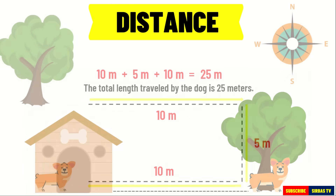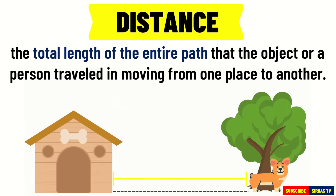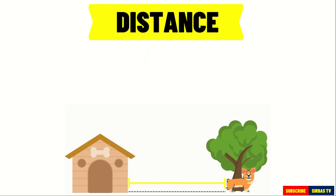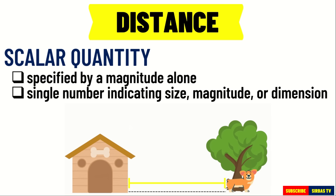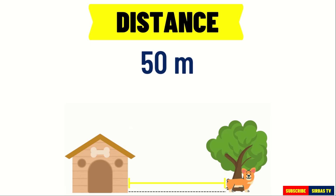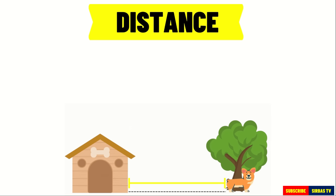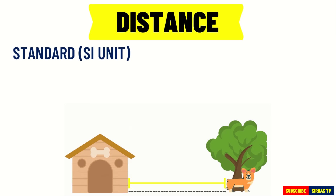In short, when you say distance, it is the total length of the entire path that the object or a person traveled in moving from one place to another. Distance is a scalar quantity. This means that it is specified by a magnitude alone. They are described with a single number indicating size, magnitude, or dimension. For example, 50 meters is a magnitude for distance — 50 is the number and meters is the unit. The standard unit of distance in the international system of units is meter, represented by a small letter M.